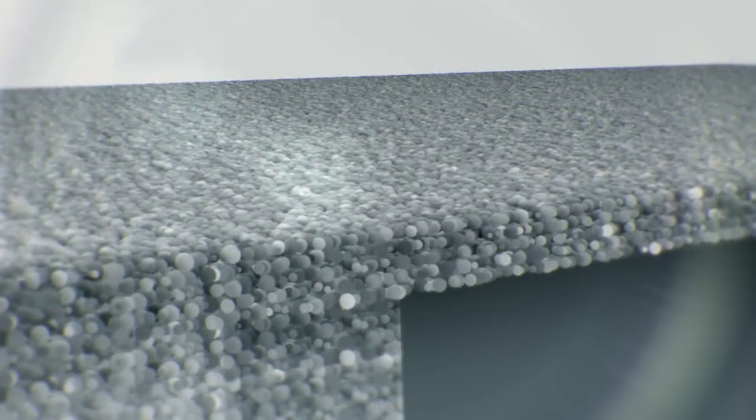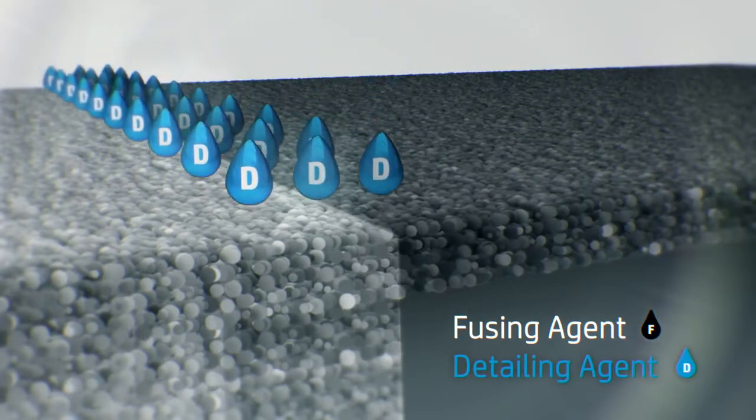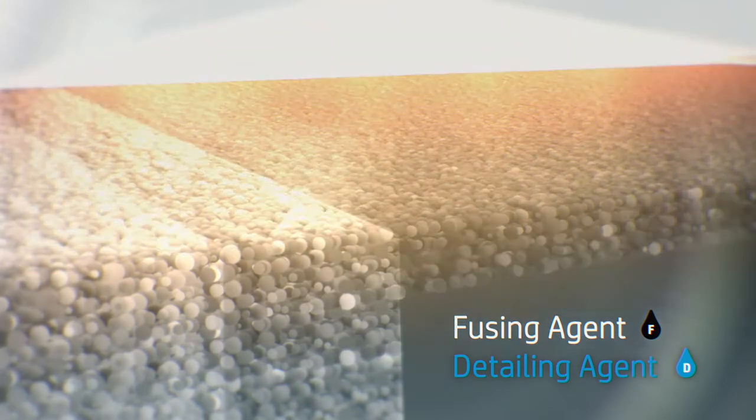In this process, a fusing agent is applied on a material layer where the particles are meant to fuse together. A detailing agent is applied to modify fusing and create fine detail and smooth surfaces. The area is exposed to energy and reactions between the agents and the material cause the material to selectively fuse together to form the part.